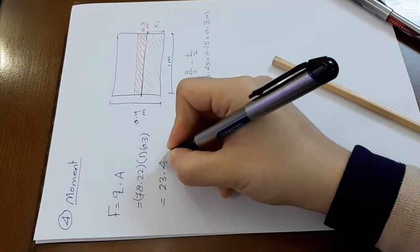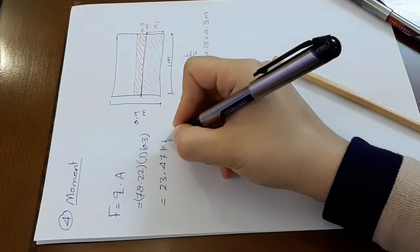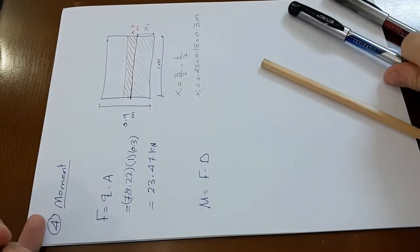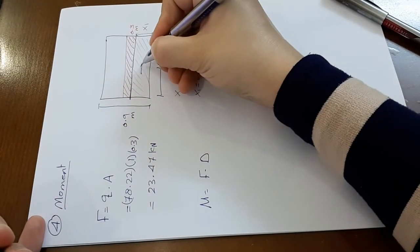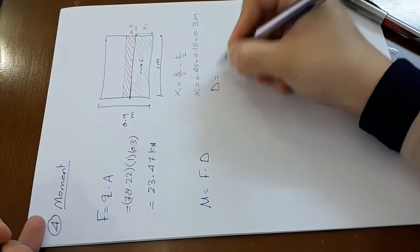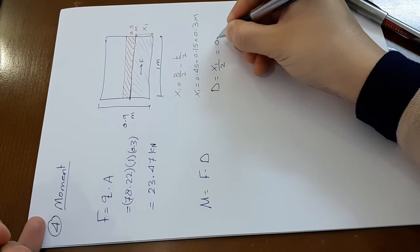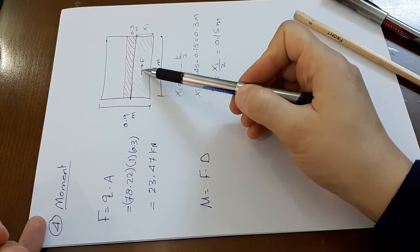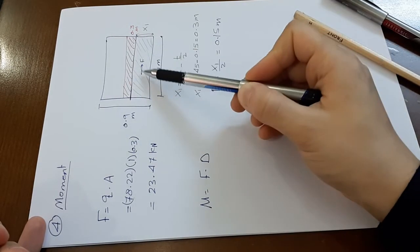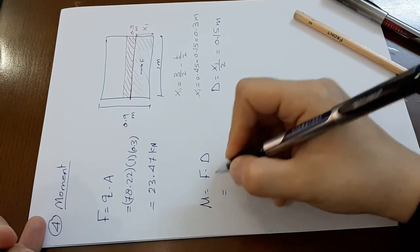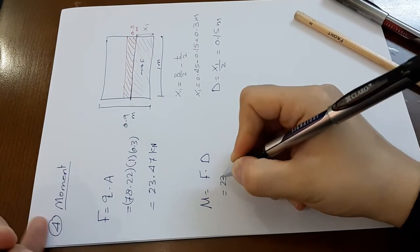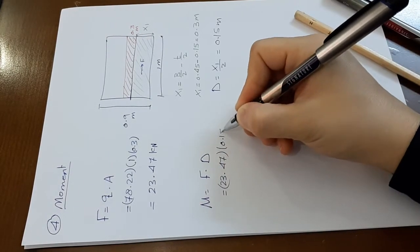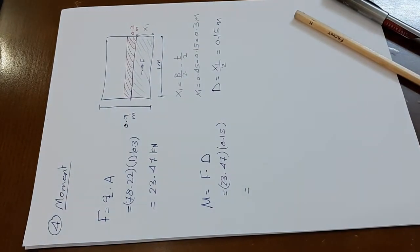Moment M equals force times distance. The force acts at the center, so d equals x1 over 2, which is 0.15. This is the distance from the force to the axis. Moment equals 23.47 times 0.15.